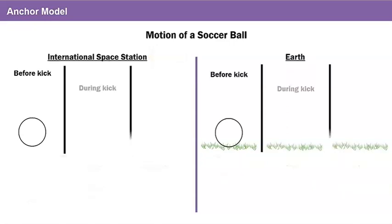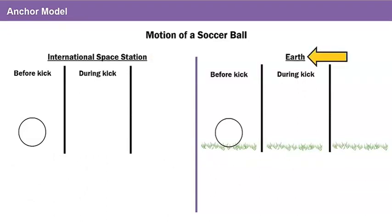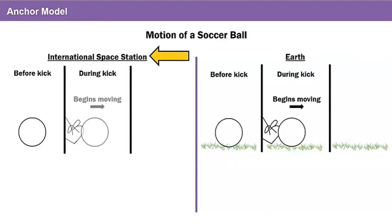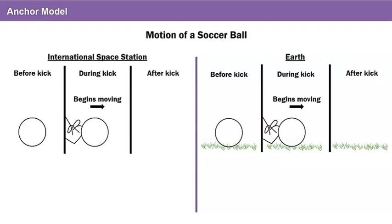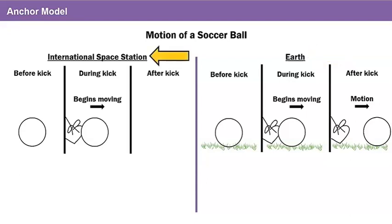Now let's add what happens during a kick. What happens to the ball when a student on earth kicks the ball? The ball begins moving. And what happens to the ball when an astronaut on the international space station kicks the ball? The ball also begins moving. Finally, let's draw what happens after the ball is kicked in each model. On earth, the ball is in motion and moves forward until it eventually stops. On the international space station, the ball is also in motion and continues to move through the air until it hits something.